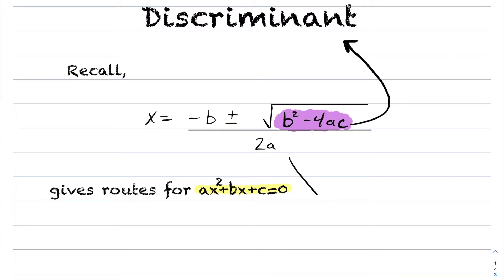So what does it give us? Your discriminant is typically labeled with a D, defined to be b² minus 4ac, and we have the following rules.